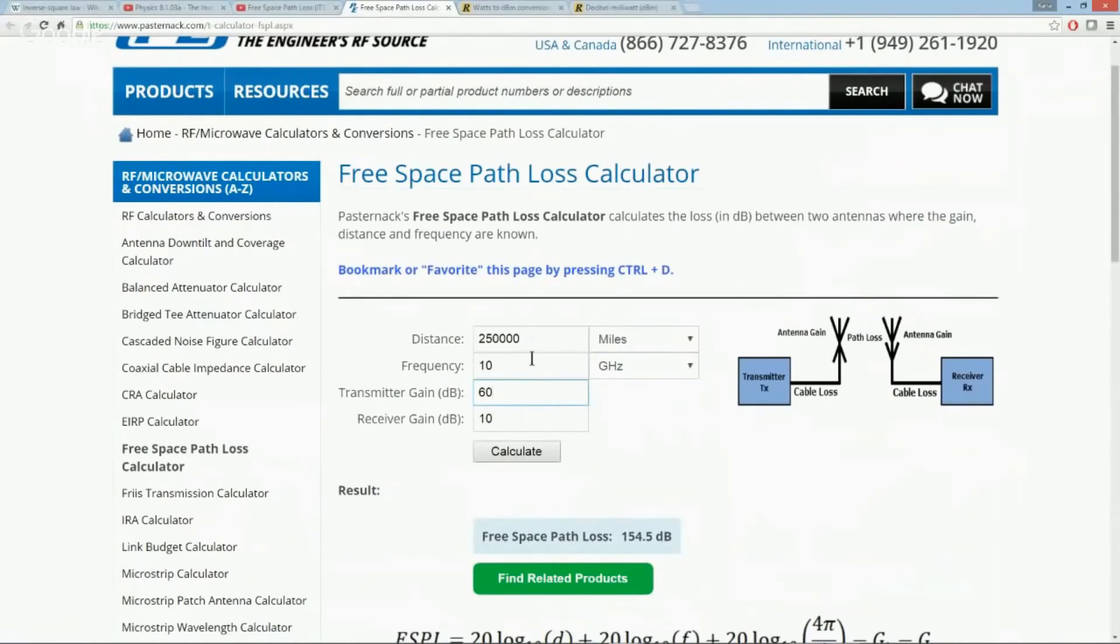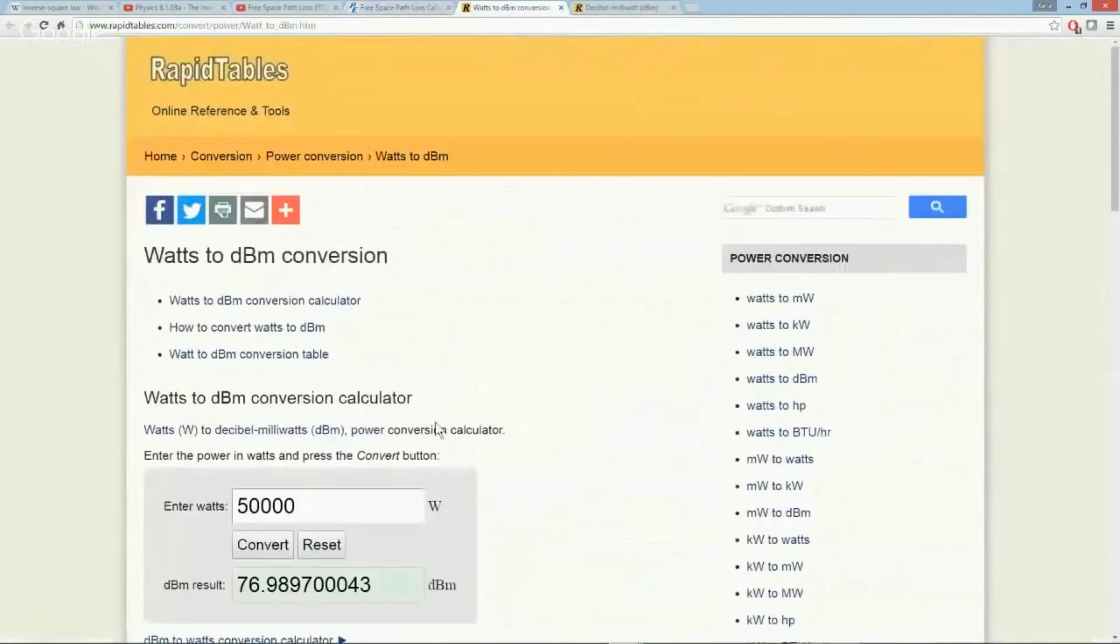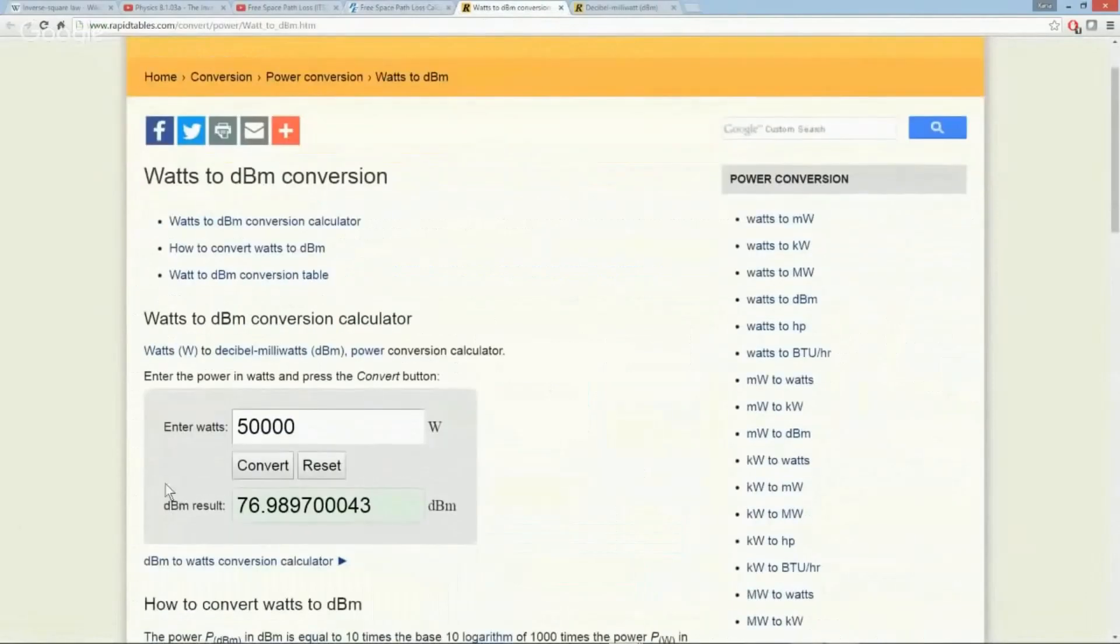When we use this transmitter gain, it doesn't really matter what the power is initially, but the transmitter gain will give you an effective radiated power on the output, and that's all we're really worried about. We're dealing with these equations in decibels.